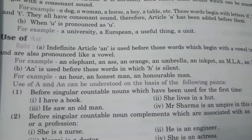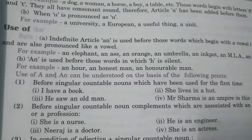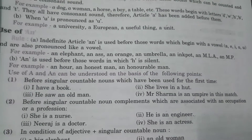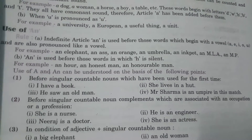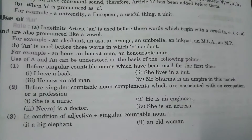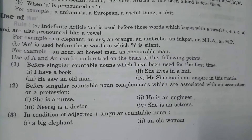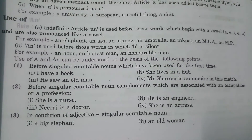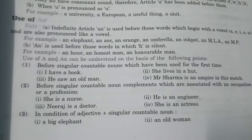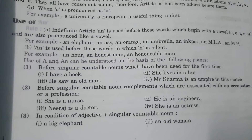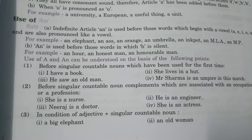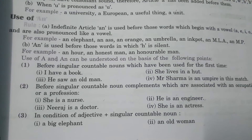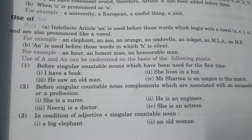Use of an. Rule of indefinite article: an is used before those words which begin with a vowel — a, e, i, o, u — and are also pronounced like a vowel. For example: an elephant, an ass, an orange, an umbrella, an ink pot. An is also used before words where h is silent. For example: an hour, an honest, an honorable man — the h will be silent.